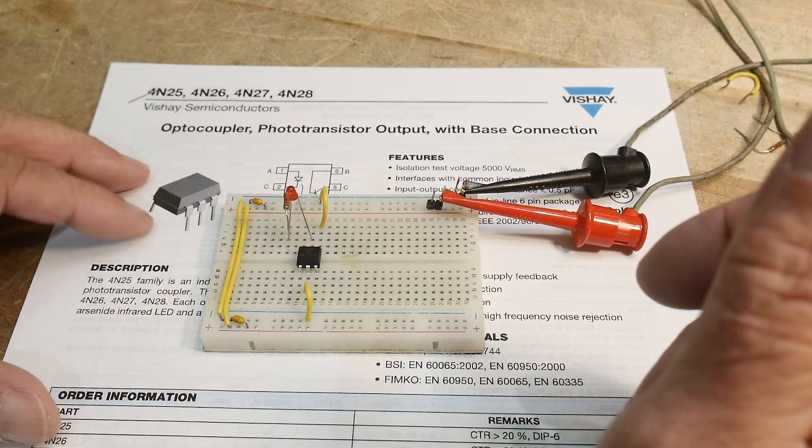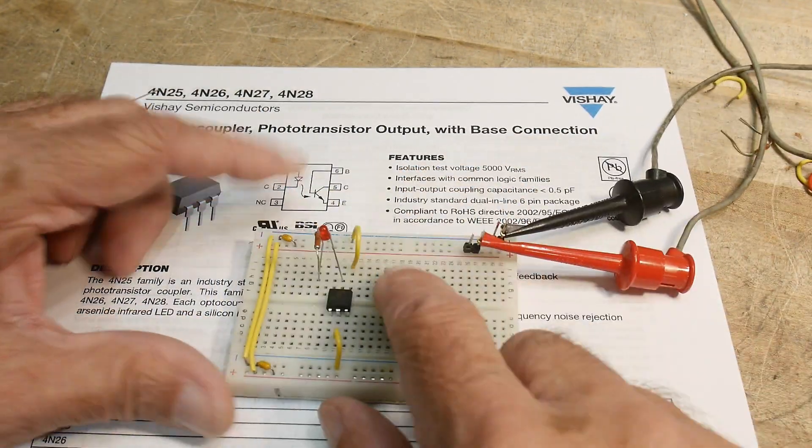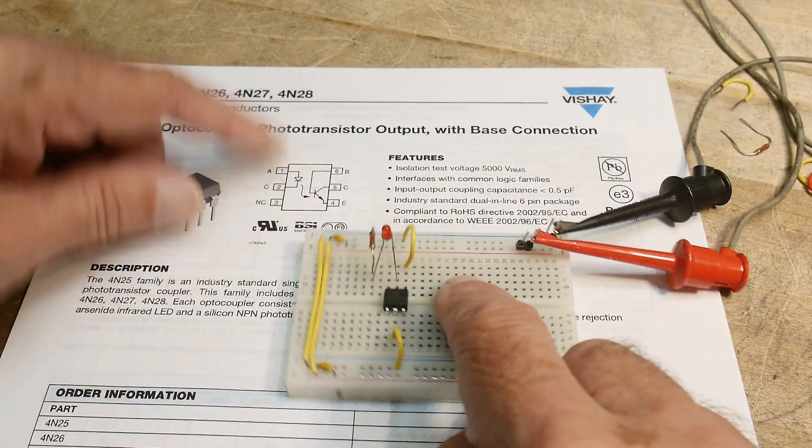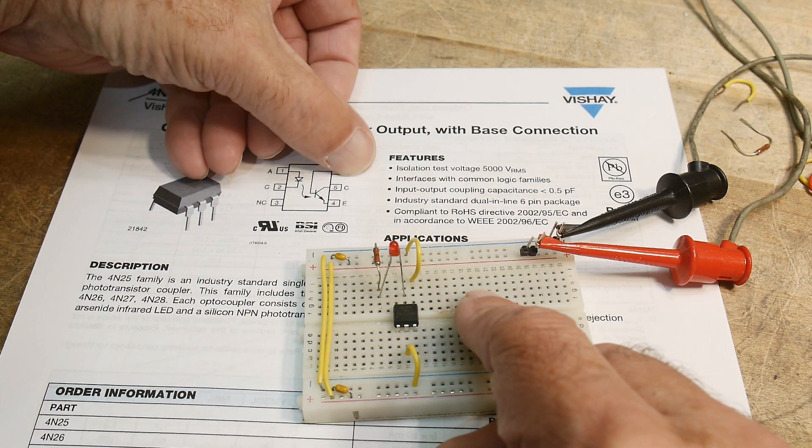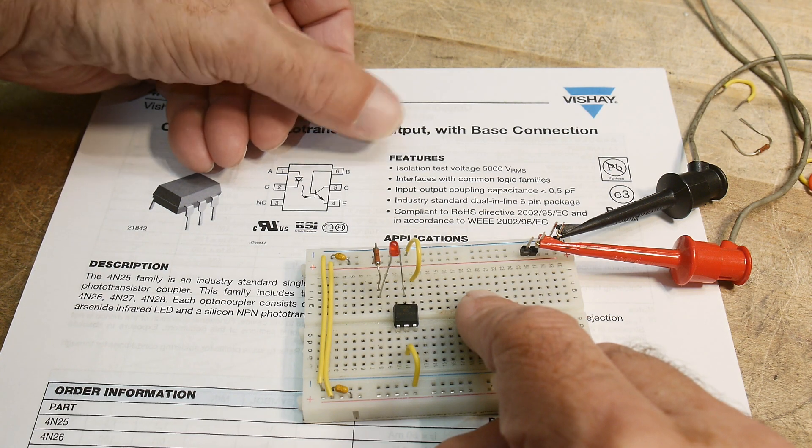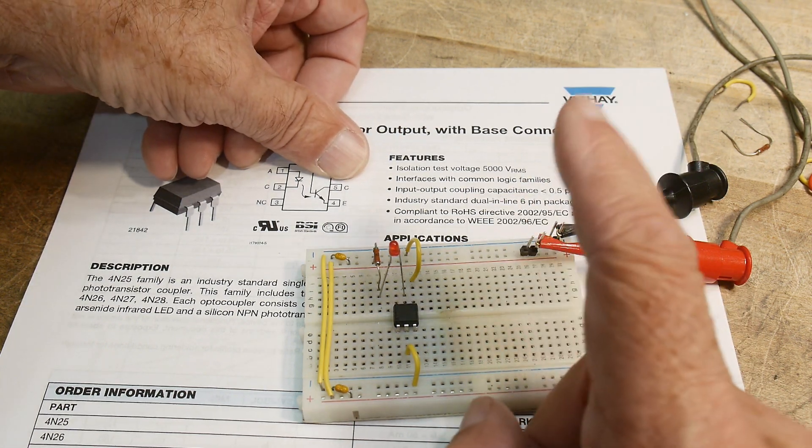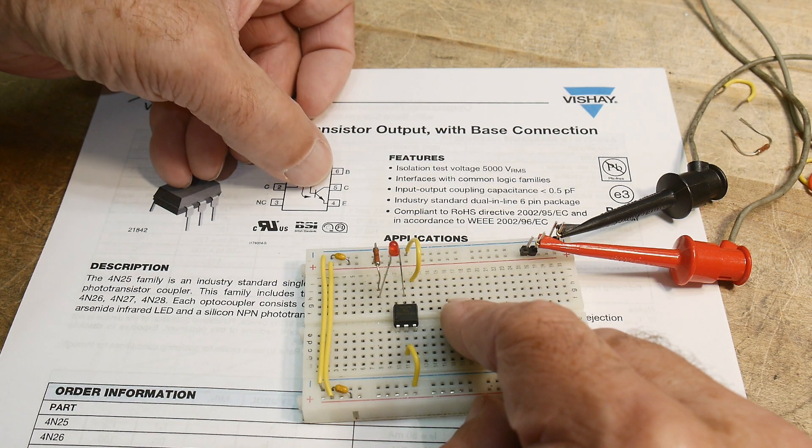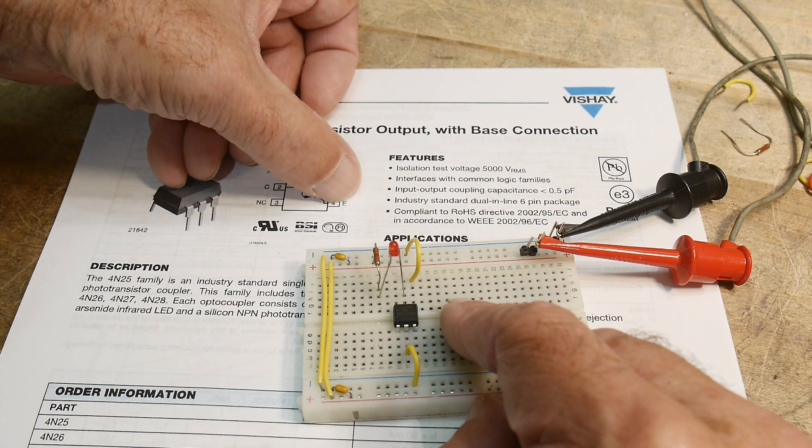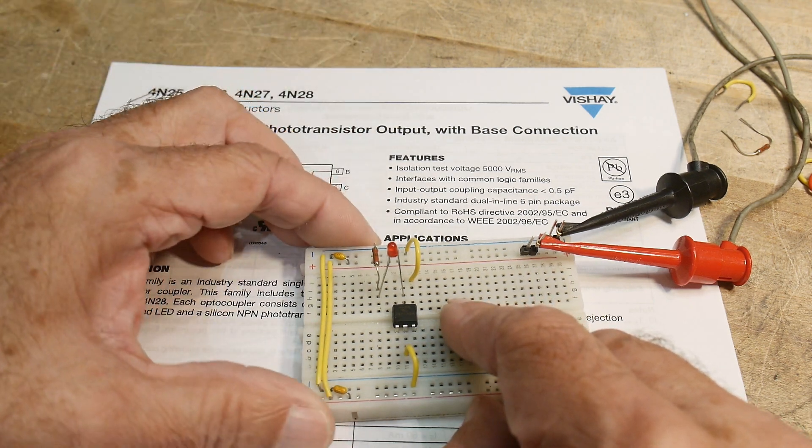So here's a circuit, and we have an LED and a 1K resistor. So pin 4 is tied to ground. Pin 5 goes to the LED and then a 1K resistor to plus voltage, plus 12. And so when this transistor's on, it will conduct to ground, and it will turn on the LED.